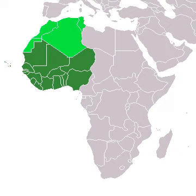The history of West Africa can be divided into five major periods: first, its prehistory, in which the first human settlers arrived, developed agriculture, and made contact with peoples to the north; second, the Iron Age empires that consolidated both intra-Africa and extra-Africa trade, and developed centralized states; third, major polities flourished, which would undergo an extensive history of contact with non-Africans; fourth, the colonial period, in which Great Britain and France controlled nearly the entire region; and fifth, the post-independence era, in which the current nations were formed.